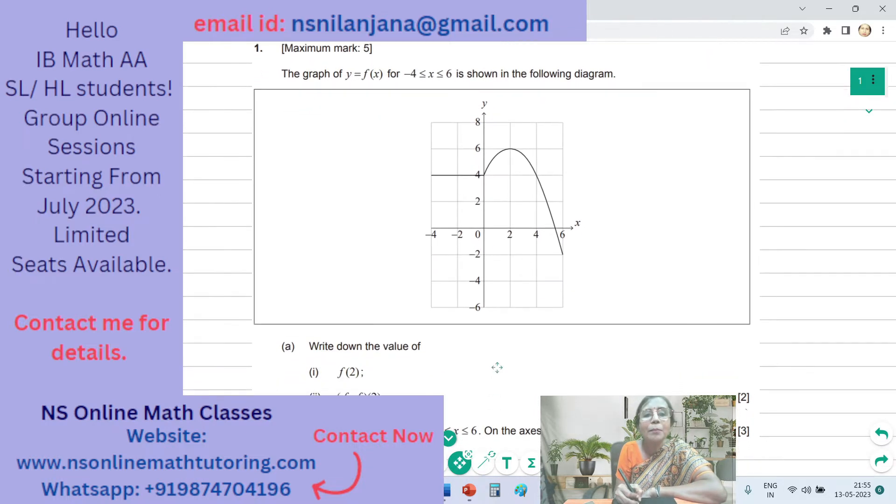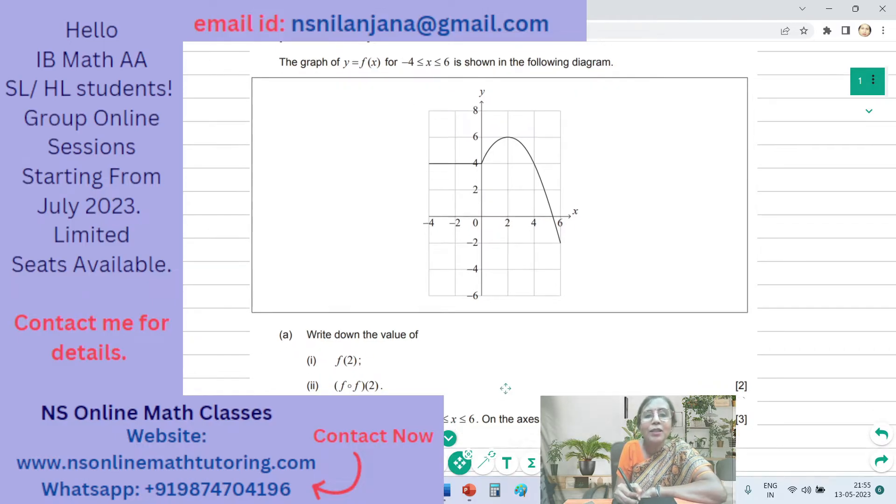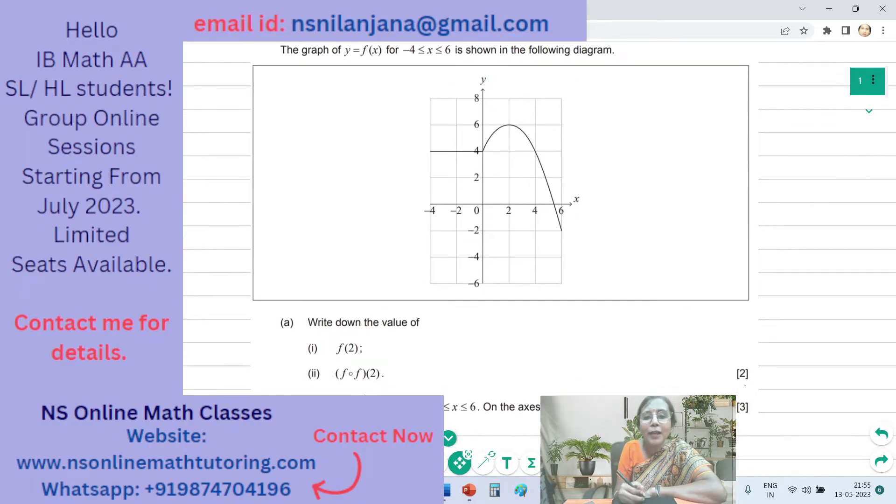Today's question is question number 1 and it contains 5 marks. The question says the graph of Y equals F of X where X is greater than or equal to negative 4 but less than or equal to 6. This is negative 4, this is 6, and this is shown in the following diagram.